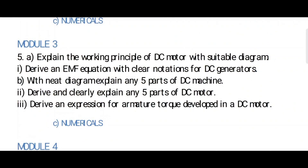Let's go to Module 3. Explain the working principles of a DC motor with a suitable diagram — this is more important. Second one: derive the EMF equation for a DC generator with usual notations — also more important. With a neat diagram, explain any five parts of a DC machine — also a more important question. Different types of torque: explain five parts — most important question. And derive the expression for armature torque developed in a DC motor. From these five questions, only these will come in tomorrow's exam.